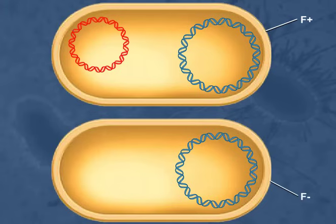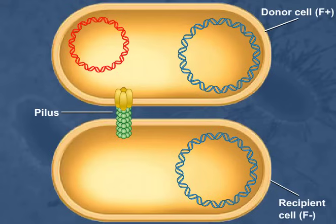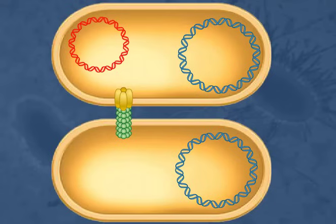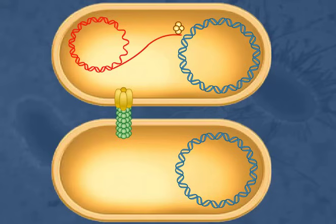An F-plus cell or donor produces a structure called a pilus to connect with another recipient cell. To begin conjugation, the F-factor is cut at a specific region called the origin of transfer by a protein assembly called the relaxosome, which associates with the strand to be transferred, or the T-DNA strand.